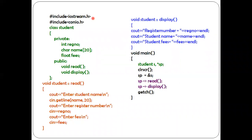Have a look at the program. The first two lines are header files: hash include iostream.h, which stands for input output stream header file, and hash include conio.h, which stands for console input output header file. Then comes the declaration of a class — a class is a user-defined data type which can hold both data and functions. The class is named Student, with three data members: register number of type integer, name of type character array of 20, and fees of type float. Two member functions are declared inside: void read and void display.